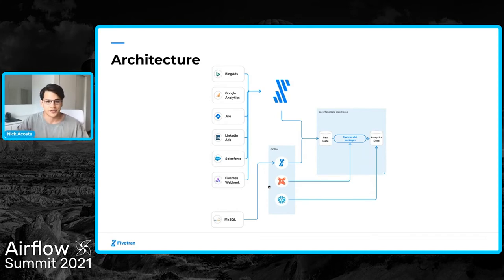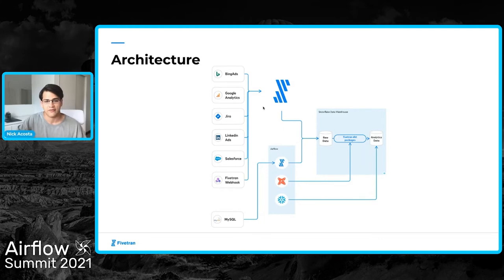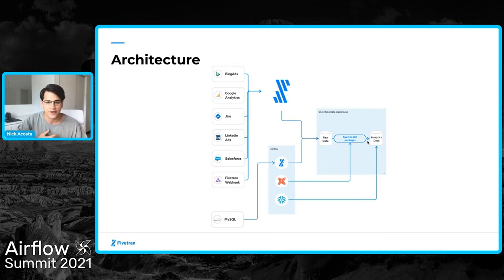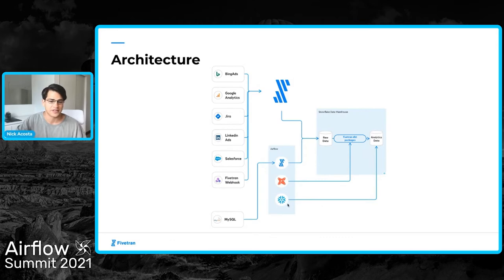In Airflow, they're using Fivetran operators — we'll talk about the Fivetran provider — and they're using DBT operators as well. DBT enables you to perform data transformations in SQL. You can see that Fivetran is bringing in data as raw source data from various different sources, and they're using DBT to transform and model that data into something easy to run analytics off of, including utilizing Fivetran DBT packages. This financial services company uses Snowflake as well as Snowflake operators in their Airflow environment.